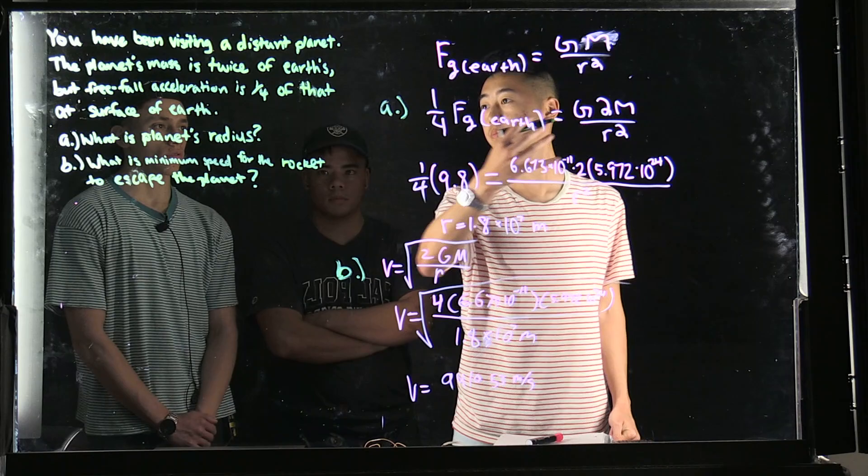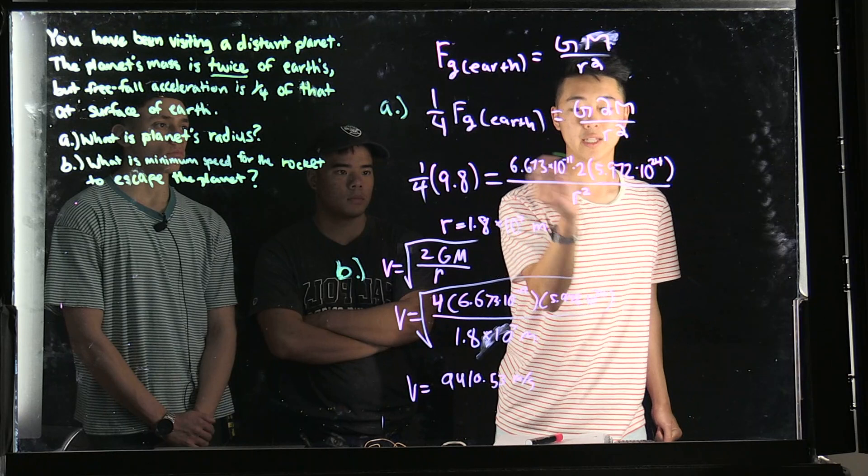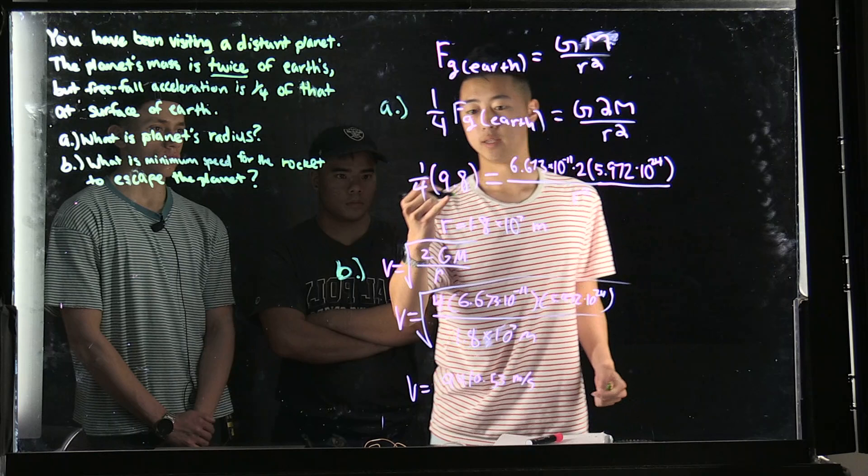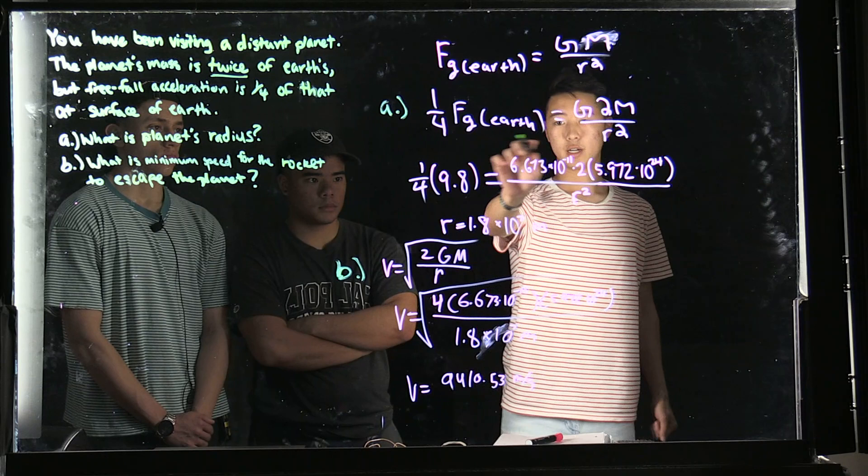The mass is multiplied by two because the planet's mass is twice Earth's. That's all over the radius, which we'll find when we plug everything in. This is the gravitational force of Earth.